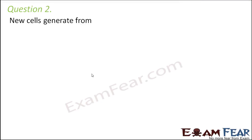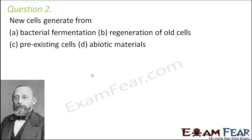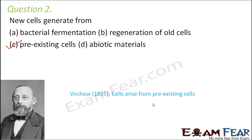Question two: new cells generate from? Remember your cell theory — it says that all organisms are made up of cells and cells arise from pre-existing cells. So already existing cells give rise to new cells, as stated by Virchow. The options include bacterial fermentation — no; regeneration of old cells — no; pre-existing cells — yes, this is the right answer. Virchow stated this around 1855, adding it as a postulate to the cell theory.